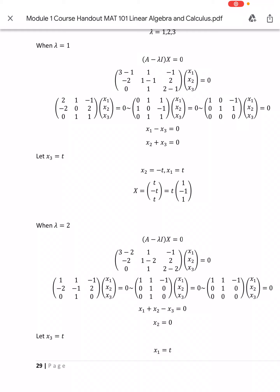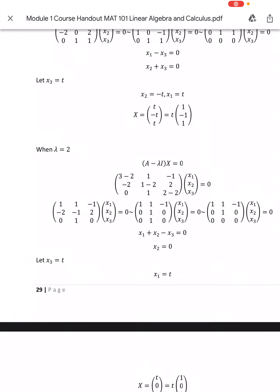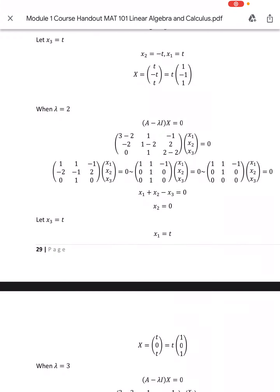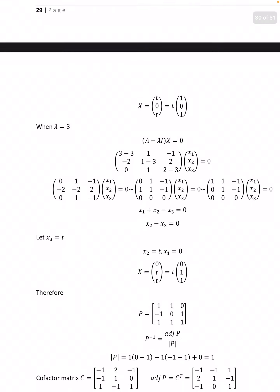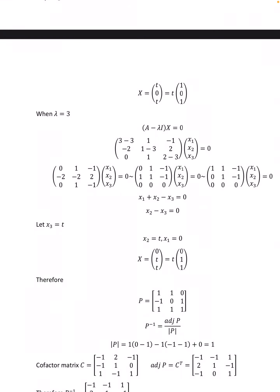When λ = 2, (A − λI)x = 0 gives [[1, 1, −1], [−2, −1, 2], [0, 1, 0]] [x1, x2, x3]ᵀ = 0, which reduces to [[1, 1, −1], [0, 1, 0], [0, 0, 0]] [x1, x2, x3]ᵀ = 0. That is x1 + x2 − x3 = 0 and x2 = 0. Let x3 = t, then x1 = t. Therefore X = t(1, 0, 1).